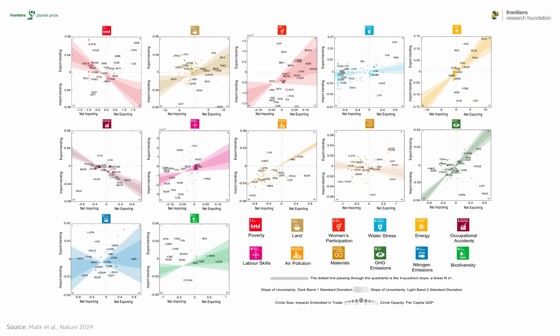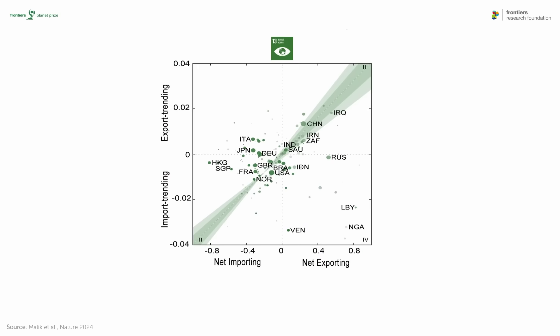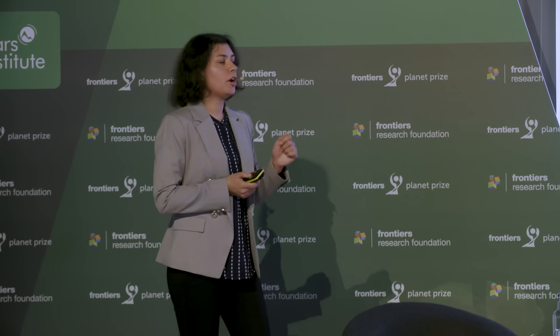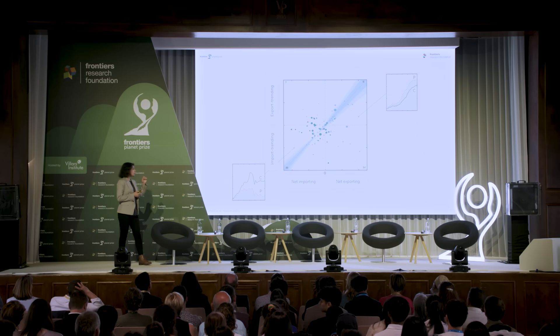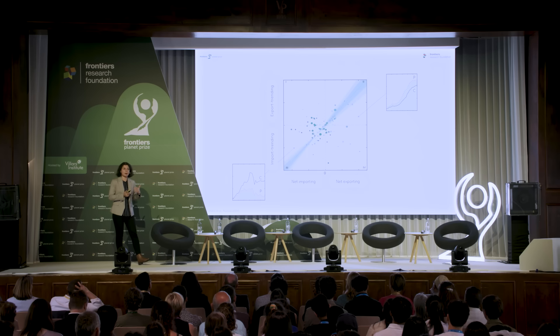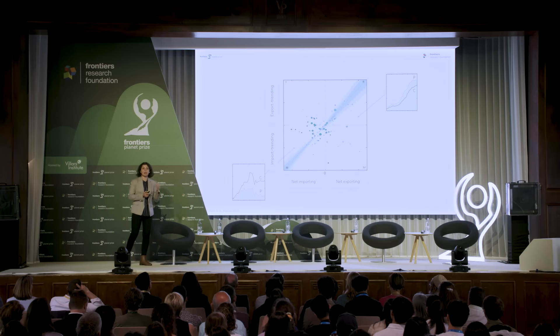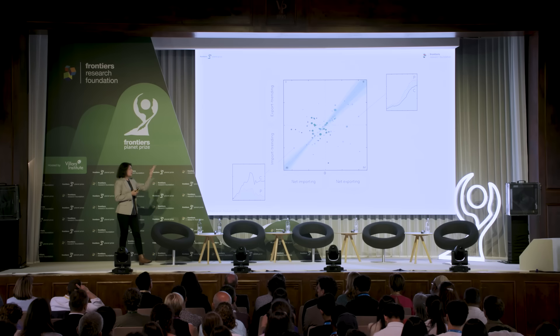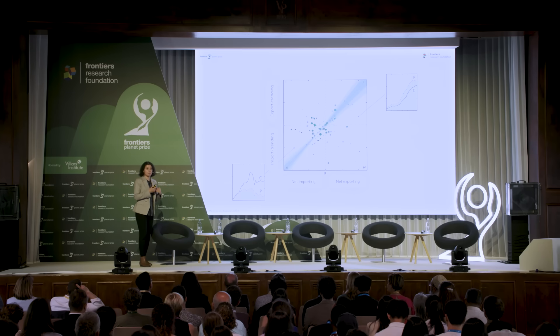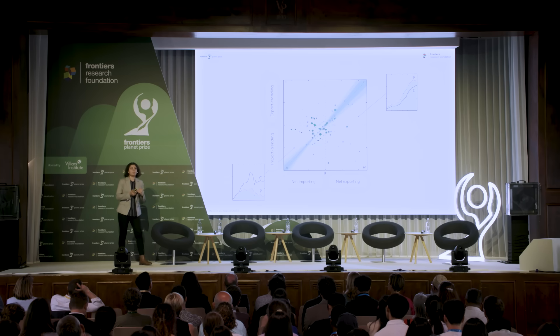Looking at SDG 13, where we observe a strong polarizing trend: there are two quadrants that we really need to take notice of. In one quadrant — countries which are net importing and import-trending — the consumption-based impacts are much higher than production-based impacts. These countries rely on production in their trading partners, which must deal with the greenhouse gas emissions from satisfying that consumption. In another quadrant, production-based emissions are higher than consumption-based — these are countries producing goods and services consumed elsewhere.